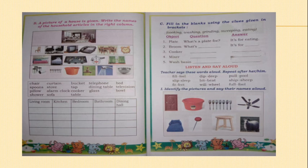Now I will read some words — the names of objects — and we have to frame questions and answer them. One is done for you. Plate: What's a plate for? It's for eating. Broom: What's a broom for? It's for sweeping. Cooker: What's a cooker for? It's for cooking. Mixer: What's a mixer for? It's for grinding. Wash basin: What's a wash basin for? It's for washing.